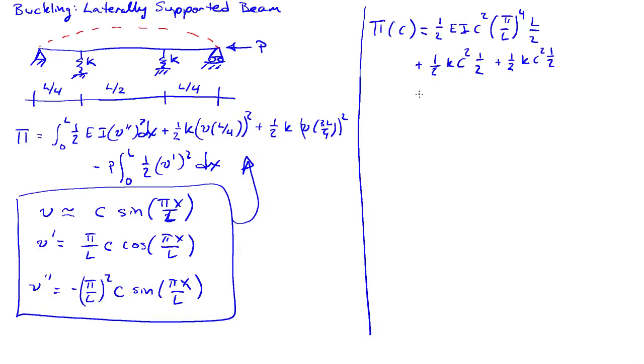Lastly, the contribution from the load: 1 half p pi over l squared l over 2 c squared. So l over 2, again, from integrating cosine squared from 0 to l in this case here.